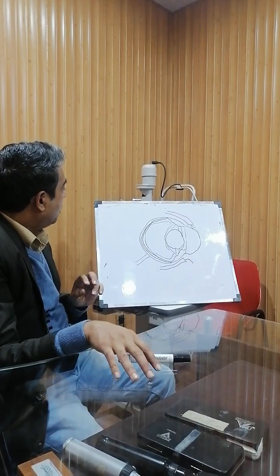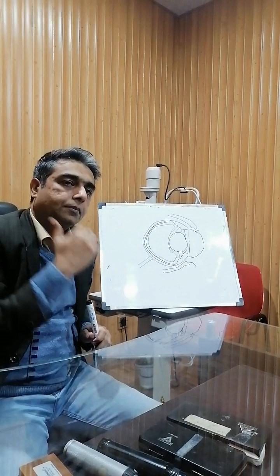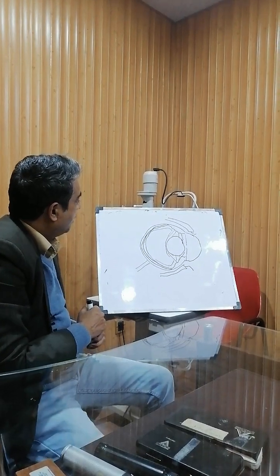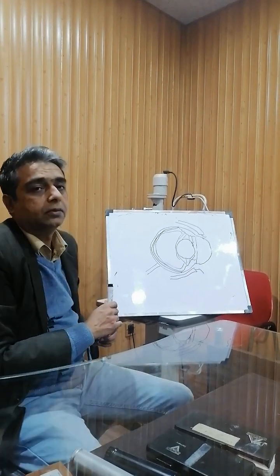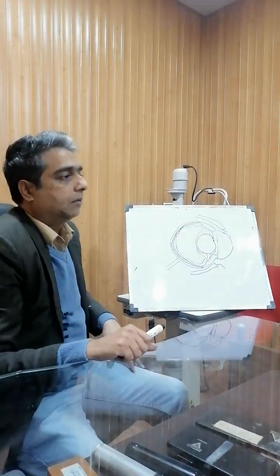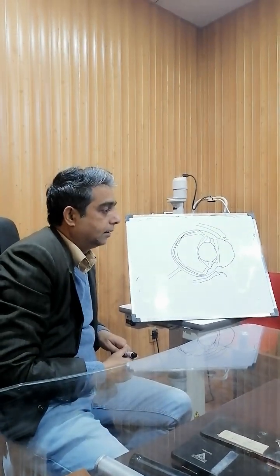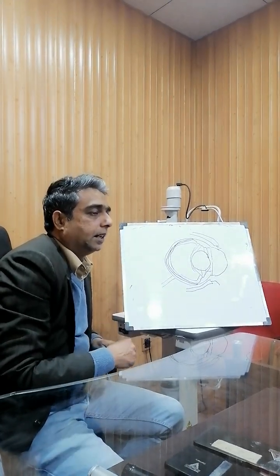There are 4 muscles attached on the eyeball which we will discuss later. Now we will briefly discuss the functions of the eye — how does the eye function. There are many functions like vision, the basic function, and then colour vision and peripheral vision.